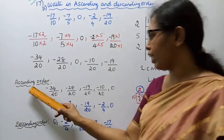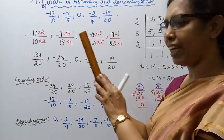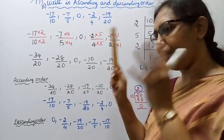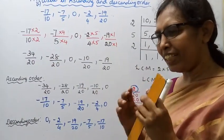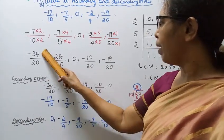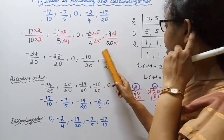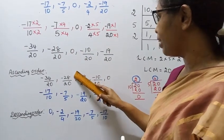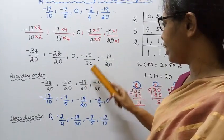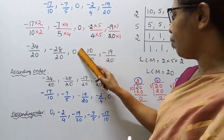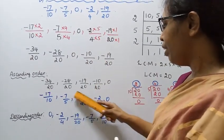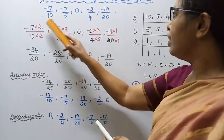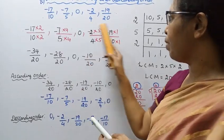Ascending order is easy. Arrange the numerators: -34, -28, -19, -10, then 0. The denominators are all 20. That's why we have the answer in ascending order.